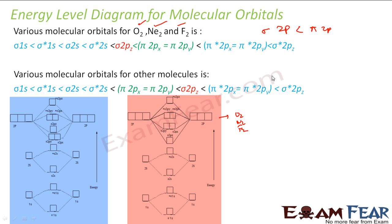Rest of the other things are all the same. The only difference is: in case of oxygen, neon, and fluorine, sigma 2p comes first and then pi 2p comes. In other cases, pi 2p comes first and then sigma 2p.